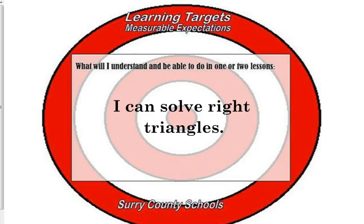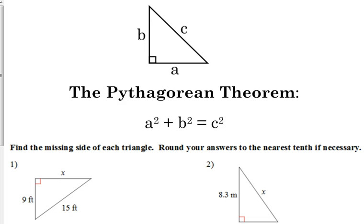You have the Pythagorean theorem right there to be able to solve right triangles. Just as a reminder, I think everybody knows it's a squared plus b squared equals c squared.